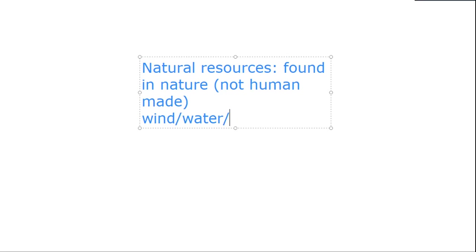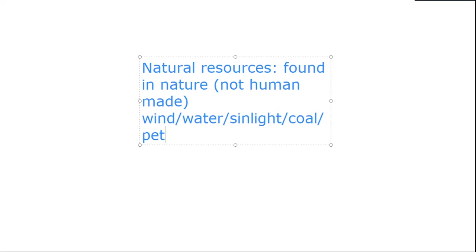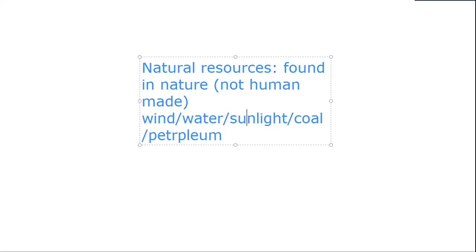Examples of natural resources: wind — we use wind, it is a natural resource; water — we drink water, so it is a natural resource; sunlight is a natural resource; coal is a natural resource; petroleum — all of these are natural resources. They are found in nature and are not human made.